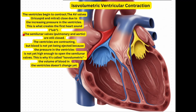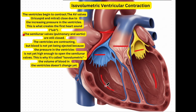In the second stage of the cardiac cycle, isovolumetric ventricular contraction, the ventricles begin to contract. The AV valves — the tricuspid and mitral valve — are now closed, and that closure is what creates the lub sound you hear in your heartbeat. The semilunar valves, which are the pulmonary and aortic valves, are still shut because the ventricles are building pressure and it is still not high enough to pump blood through them. As a result, the volume of blood inside the ventricles does not change — hence the name isovolumetric ventricular contraction.